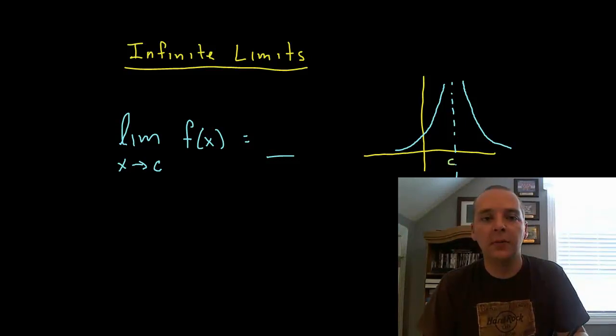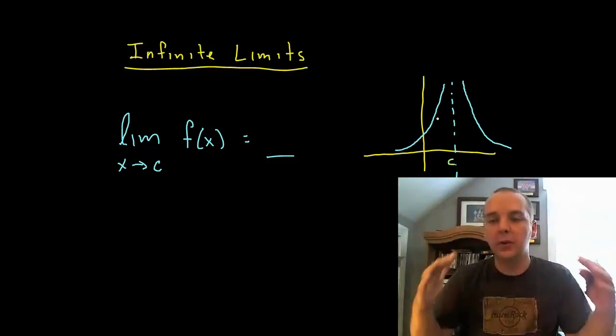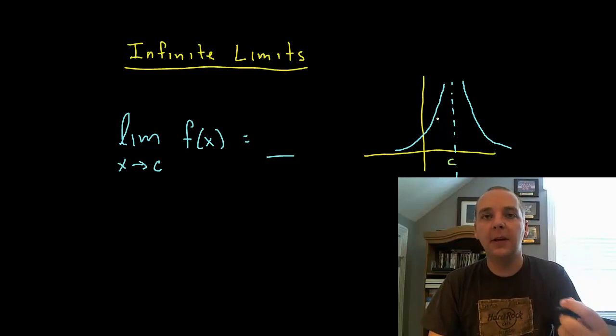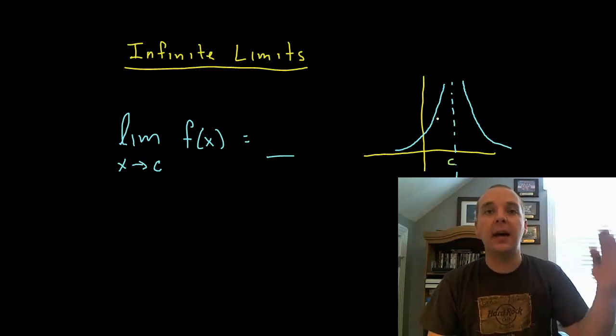So here's what we do. If we have a limit as x approaches c of some function that approaches an asymptote like this and both sides are going towards infinity, well we obviously can't pick a numerical value, a big one like a thousand or a million or a billion because any fixed constant it will eventually pass that.